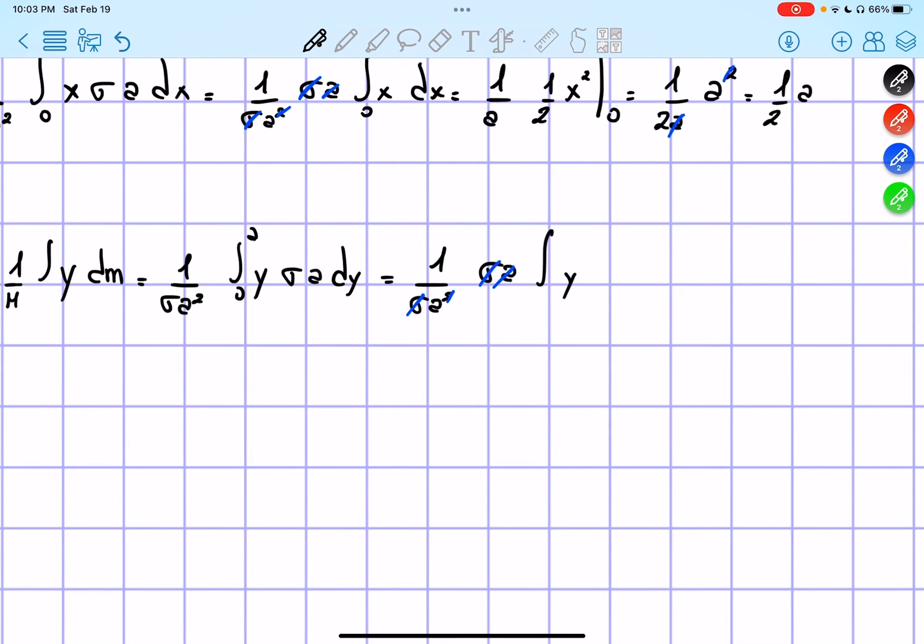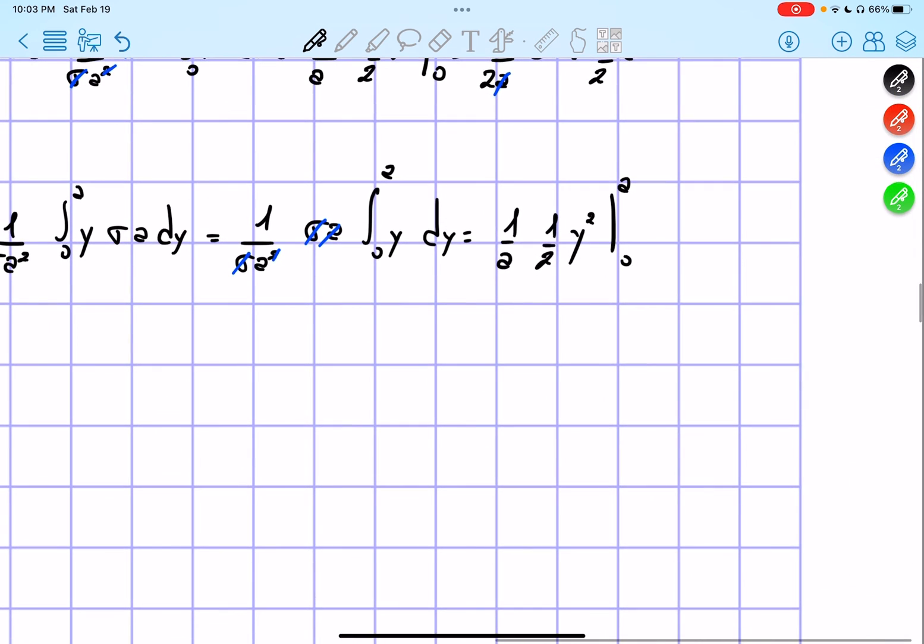Equals to 1 over a, and the integral of that is going to be equals to 1 half y squared from 0 to a, and then we're going to get 1 over 2a times a squared, simplify this.